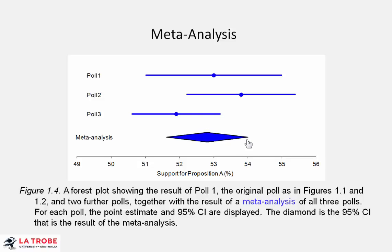Here we've applied meta-analysis to calculate an overall result, represented by a diamond — which is a good way to distinguish the result of a meta-analysis. The fattest part of the diamond is our point estimate, based on calculations from these three polls. The length here is the length of the confidence interval, called the interval estimate, calculated from combining all three results. This confidence interval — the diamond — is a little shorter than any of the others. It's a little more precise, and that's excellent. That's what often happens, and that's what we'd like to happen.